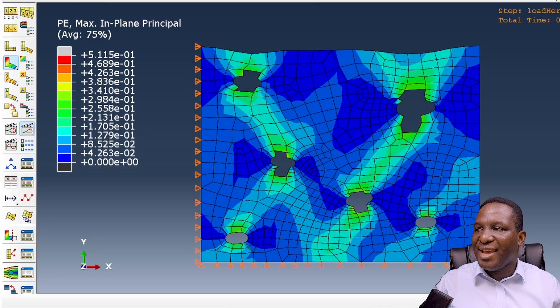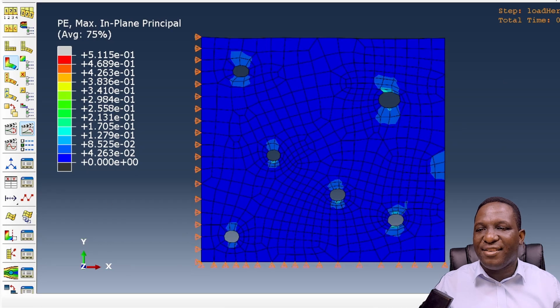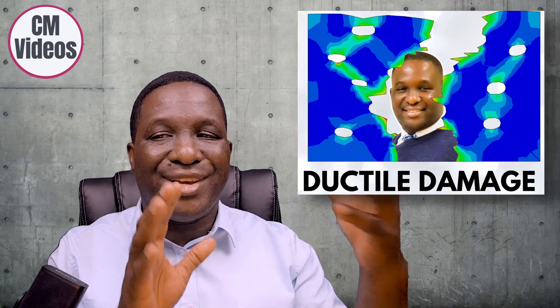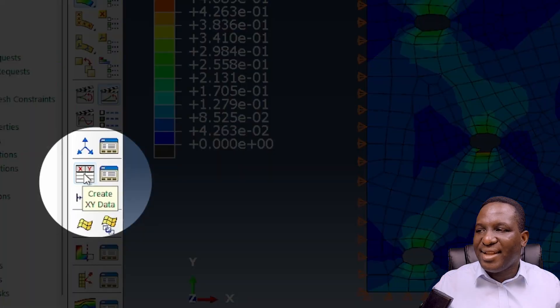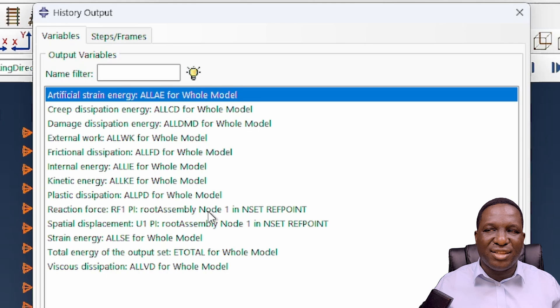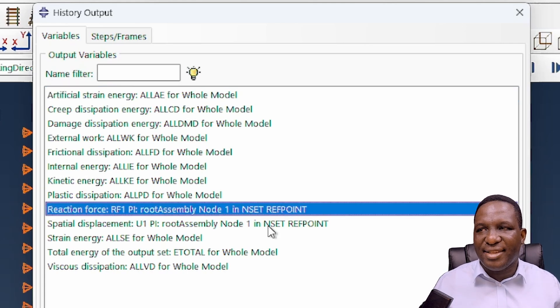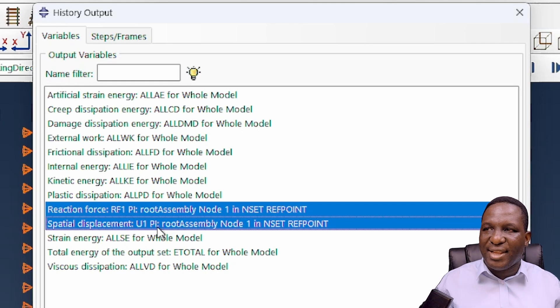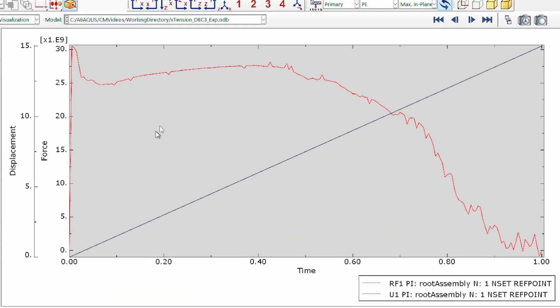We want to get stress-strain data. During the setting up of the model, we've already asked for a history variable to be extracted—the behavior on that node. Again, if you want to learn how I've set this up, this video is where I show extensively what I have done. If we look at createXY data, we're tracking the history output. The history output we've asked for is the reaction force in the x-axis, which is RF1, and the displacement in the one axis. I'm pressing down shift control to select both of them, and we're extracting it on the reference point node. Then we'll plot the result, which gives us a nice behavior across the system. It is in terms of force versus time and displacement versus time.